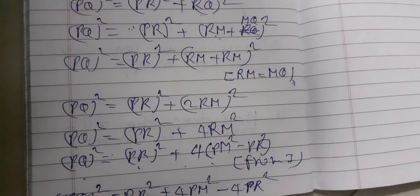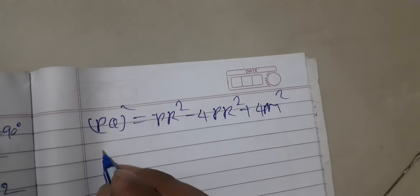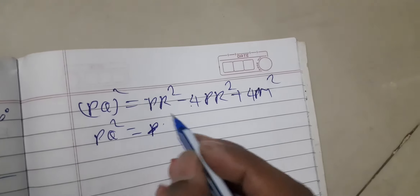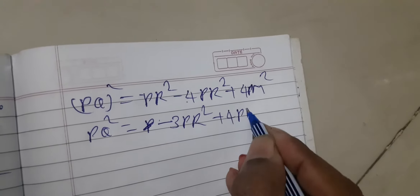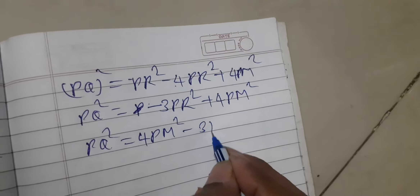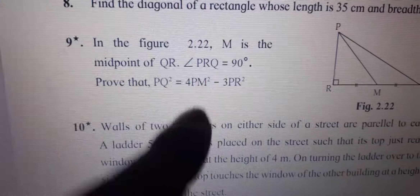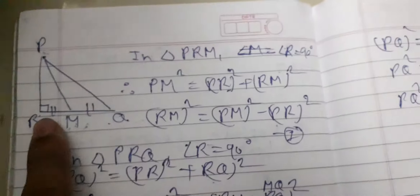Expanding: PQ square is equal to PR square plus 4PM square minus 4PR square. Collecting the PR square terms: PQ square is equal to 4PM square minus 4PR square plus PR square, which gives 4PM square minus 3PR square.